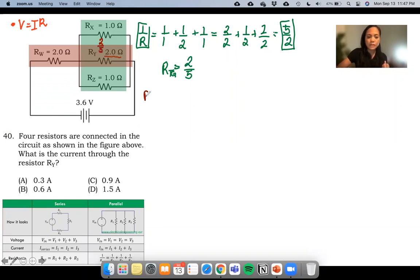The total resistance there is 2 plus 2 over 5 or simply 2 and 2 fifths, a mixed number.